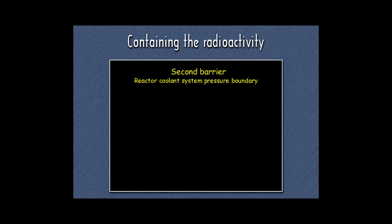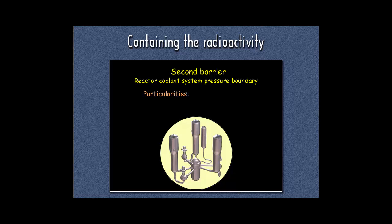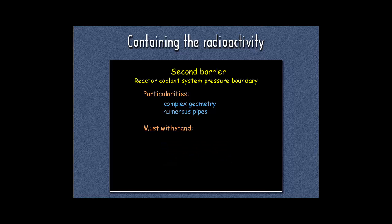The second barrier — the reactor coolant system pressure boundary — is a complex arrangement of large chambers and pipes such as the primary loops, and also comprises ancillary systems consisting of many pipes of different diameters. The challenge here is the extremely high pressure the system is subjected to, requiring thick walls, with danger of pressure excursions well beyond normal operating levels and eventual fatigue of materials with associated risk of leakage.